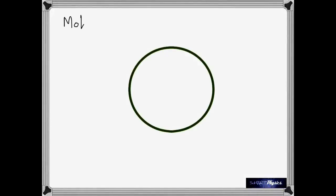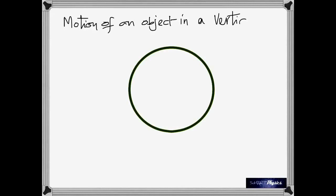This is just a quick video on motion of an object in a vertical circle. Consider this as a review for exam 2. That's the circle made in a vertical plane, and we're going to look at the forces that act on an object making this vertical circle.